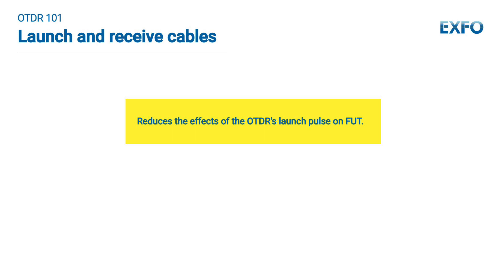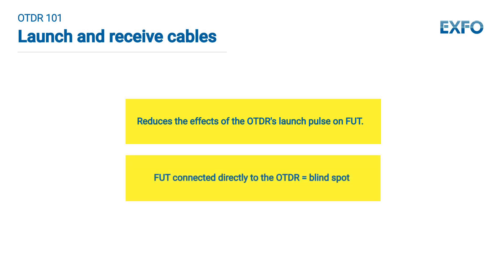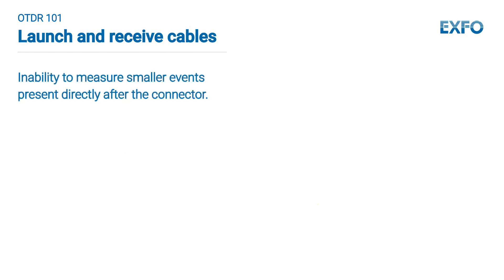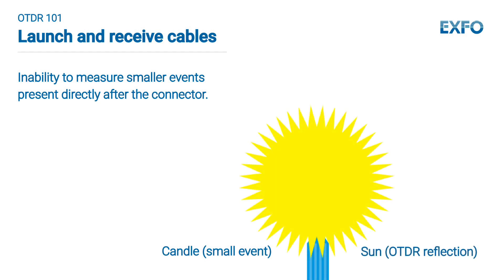The main purpose of the launch cable is to reduce the effects of the OTDR's launch pulse on the fiber under test (FUT). If the FUT was connected directly to the OTDR, the reflection from that connection would create a blind spot — too much power to measure smaller events immediately after the connector. Imagine putting a small candle (a small event) in front of the sun (the OTDR reflection from the connector) — would you distinguish the candle?